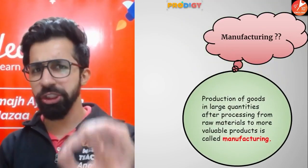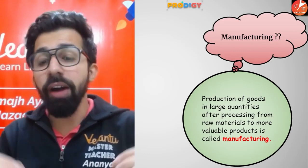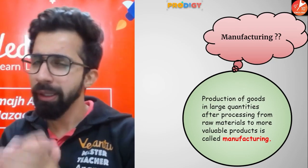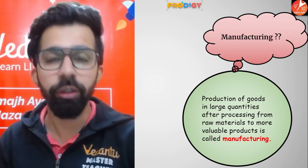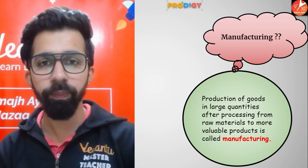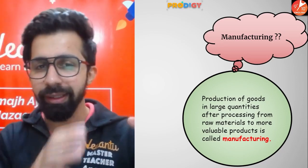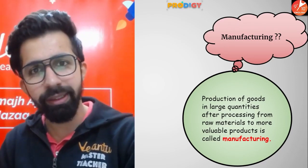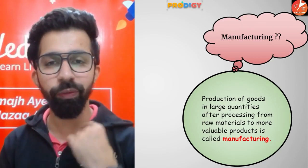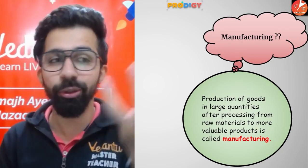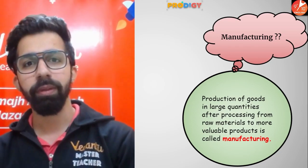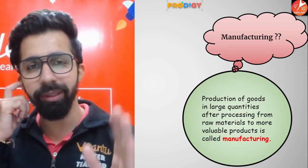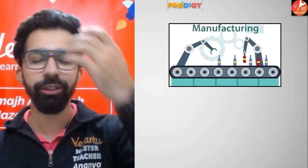Manufacturing is the production of goods in large quantities after processing from raw materials. For example, this jacket is made up of cotton — a raw material taken from the primary sector. That raw material is taken to the textile industry, processing takes place, and this is the final manufactured product. The final product is more valuable and more long-lasting. This entire process is known as manufacturing.